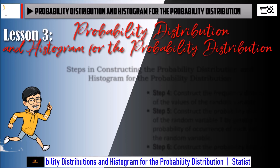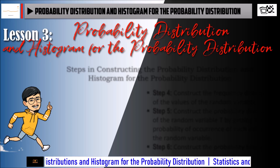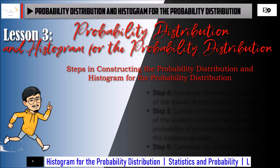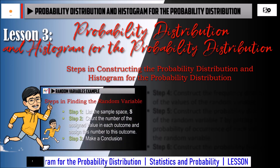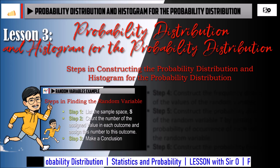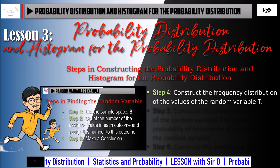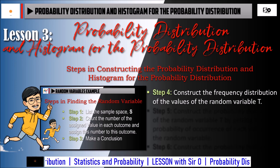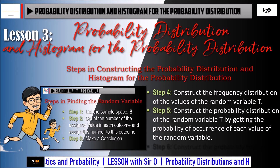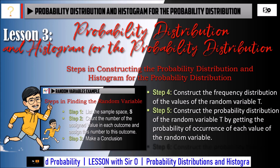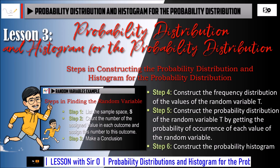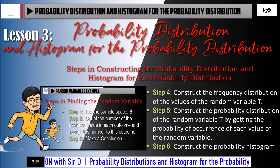Lesson 3: Probability Distribution and Histogram for the Probability Distribution. Here are the steps in constructing the probability distribution and histogram. Following the 3 steps in finding the random variables, here are the additional steps. Step 4: Construct the Frequency Distribution of the Values of the Random Variable T. Step 5: Construct the Probability Distribution of the Random Variable T by getting the probability of occurrence of each value of the random variable. And last, Step 6: Construct the Probability Histogram.